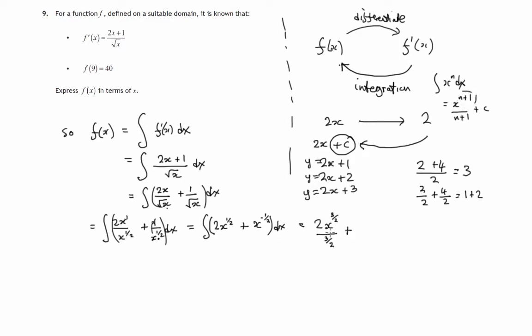So we'll do the same to this one. We'll increase the negative 1 half by 1, adding 1 to negative 1 half or 2 halves to negative 1 half, we'll get 1 half and divide by that new index. Now absolutely crucial when we integrate we must get a constant of integration.